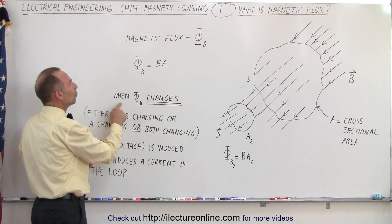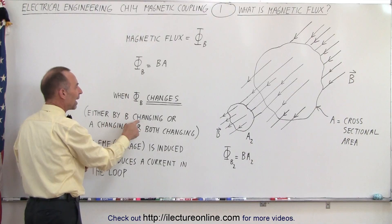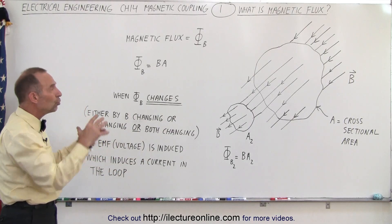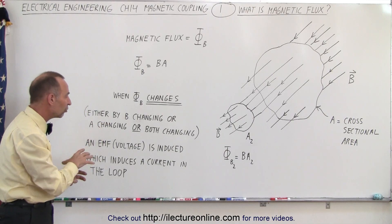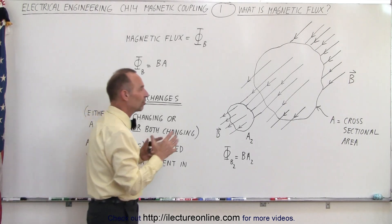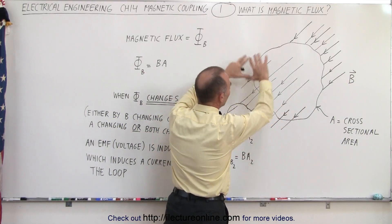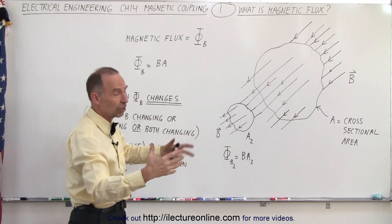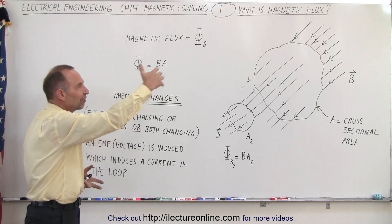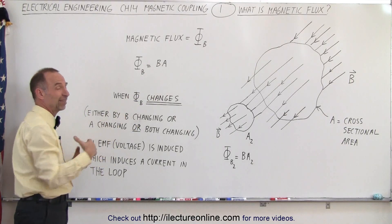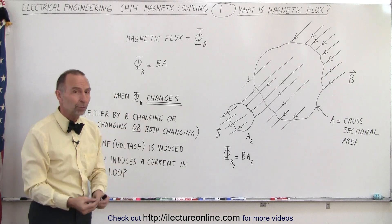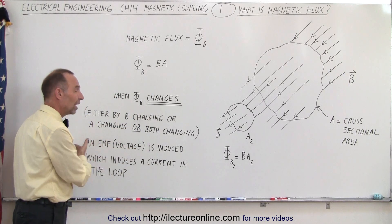Now we also need to know that when the magnetic flux changes through a loop — either by the B field changing, or by the area changing, or both — we induce an EMF in the loop and that causes a current to be induced. The key concept of magnetic flux is simply the product of how strong the magnetic field is times how big the loop is. If the loop is bigger or the magnetic field is stronger, we have more flux; if the field is weaker or the loop is smaller, we have less flux. When nothing is changing — when the B field remains constant and the area of the loop remains constant — no voltage is induced and no current is induced.